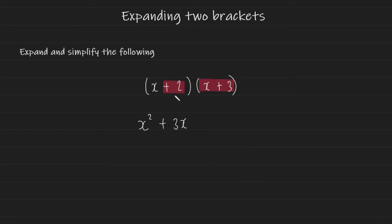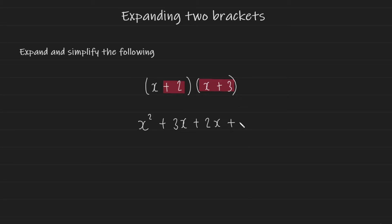Except this time, we're taking the second term of the first bracket and multiplying it onto everything. This gives us positive 2 multiplied by x, which gives us plus 2x. And positive 2 multiplied by positive 3 gives us positive 6, or plus 6.